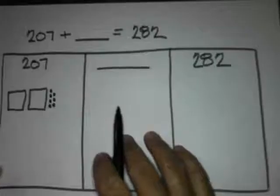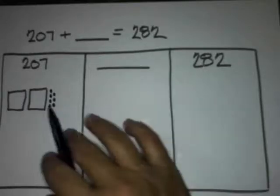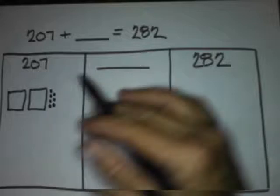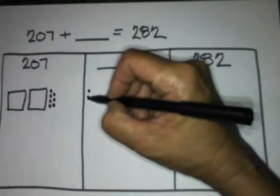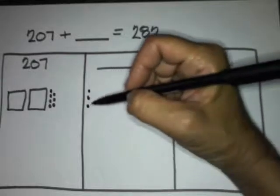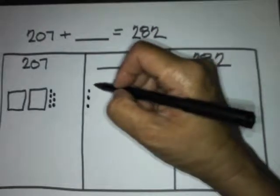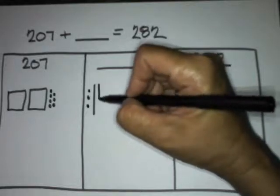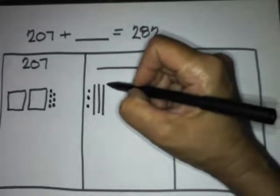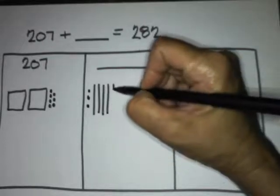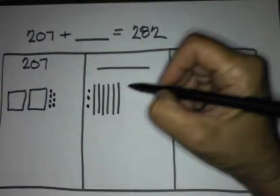Now we're going to count on until we get to 282. 207 — with me, class: 208, 209, 210. Now that we're at the 210 mark, we're going to count on by 10: 220, 240, 260, 270, 280.